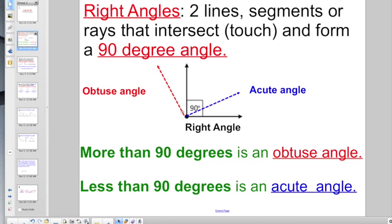So anything larger than 90 degrees, that's called an obtuse angle. Anything smaller than 90 degrees, those were your acute angles. Do you remember all that?